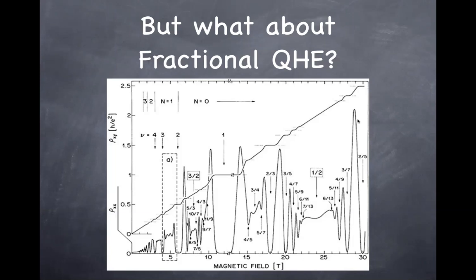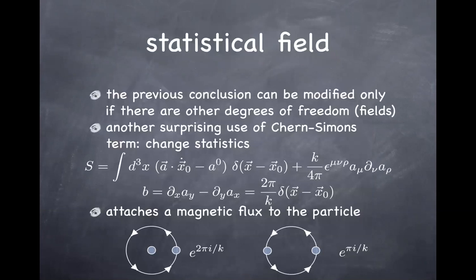These vertical spikes correspond to conductivity along the direction of the electric field, representing transitions from one plateau to another. You see very similar behavior, except now the conductivities are fractional. How do we understand that? The argument presented earlier didn't depend on many details — the only thing that can go wrong is if there are additional fields we need to include. I implicitly assumed that after integrating out all gapped degrees of freedom, the system depends only on the electromagnetic fields. That's the only assumption that can be violated when trying to explain the fractional quantum Hall effect.